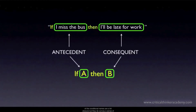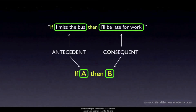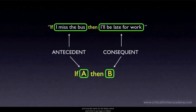The names are a bit obscure, but they do convey a sense of the role the claims are playing. 'Antecedent' means what comes before; the consequent is a consequence of what has come before. These names are handy to know because they're used in translation exercises and to identify logical fallacies. One of these fallacies is called affirming the consequent — you commit this fallacy when you assume from the fact that I was late for work that I must have missed the bus. You're affirming the consequent and trying to infer the antecedent, which is an invalid inference.